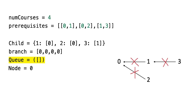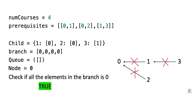After iterating through all the elements, if the branch still has non-zero elements, that means that course cannot be completed and we will immediately return false. I hope the approach is clear. Now let's get into the solution.